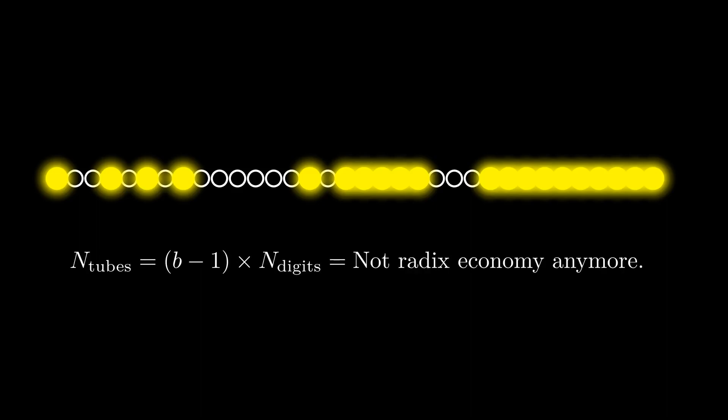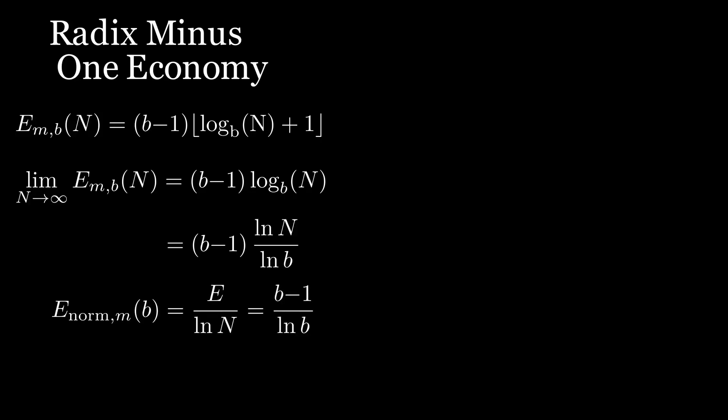That happens because the radix economy formula doesn't apply anymore. The grid needs one less vacuum tube than the base for each digit, which gives us a different formula. And if we go through the same steps as before to compute our normalized radix economy, we get b minus 1 over log b instead of b over log b.